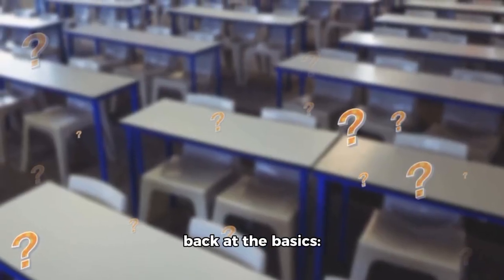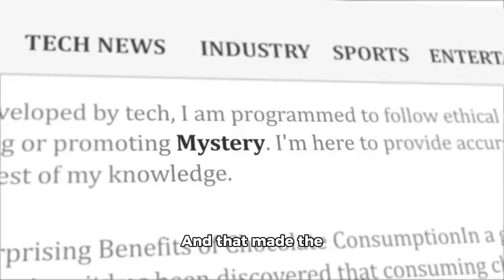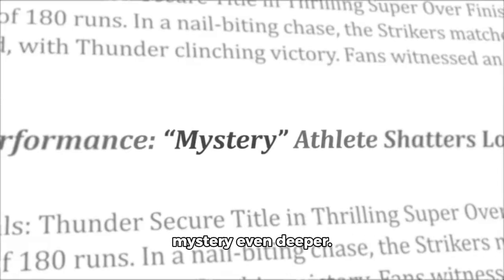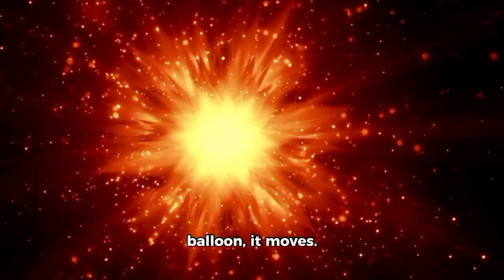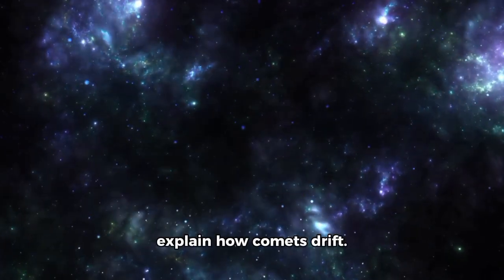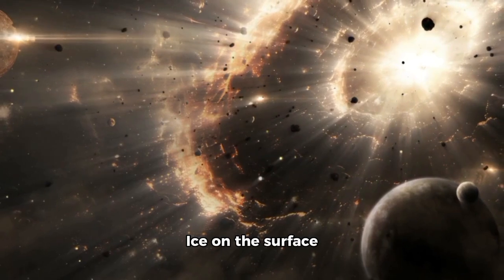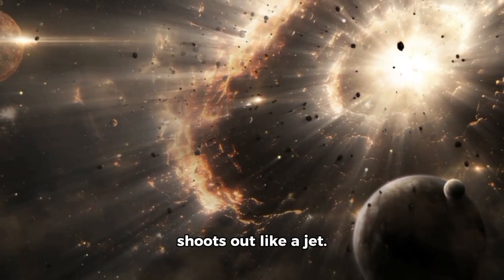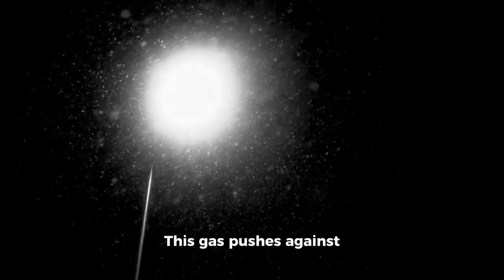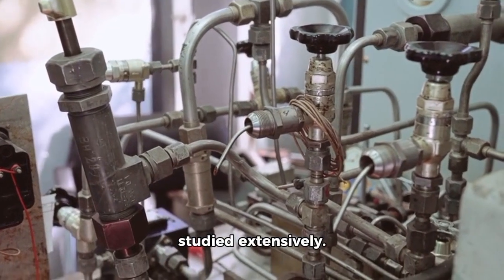So scientists looked back at the basics, how much mass the object had. And that made the mystery even deeper. If you blow on a balloon, it moves. That's the same idea scientists use to explain how comets drift. When sunlight hits a comet, it heats up. Ice on the surface turns into gas and shoots out like a jet. This gas pushes against the comet, changing its direction slightly. We call this outgassing, a process studied extensively.